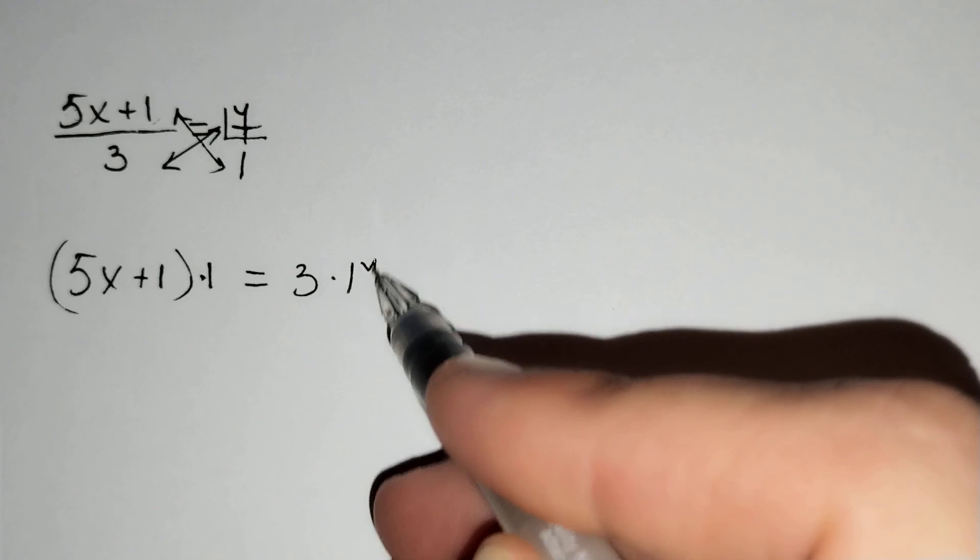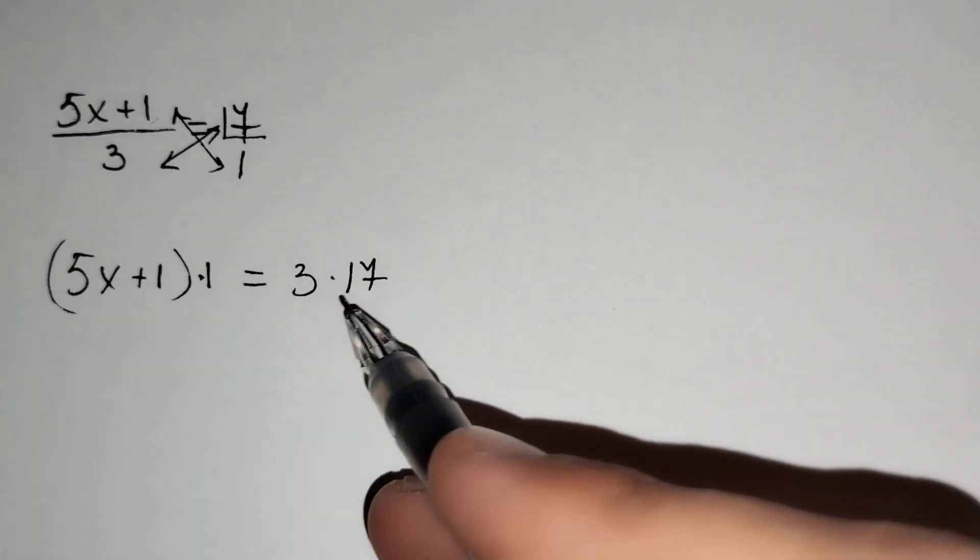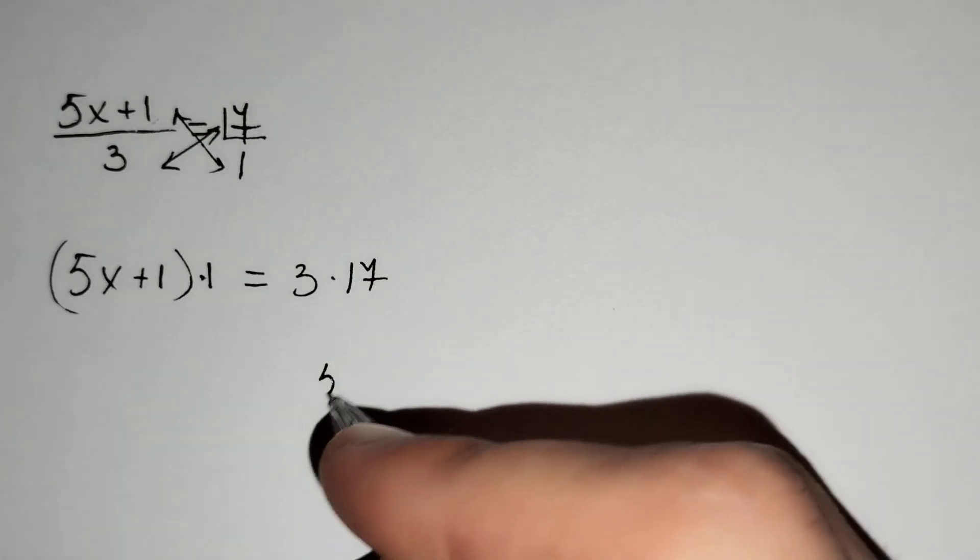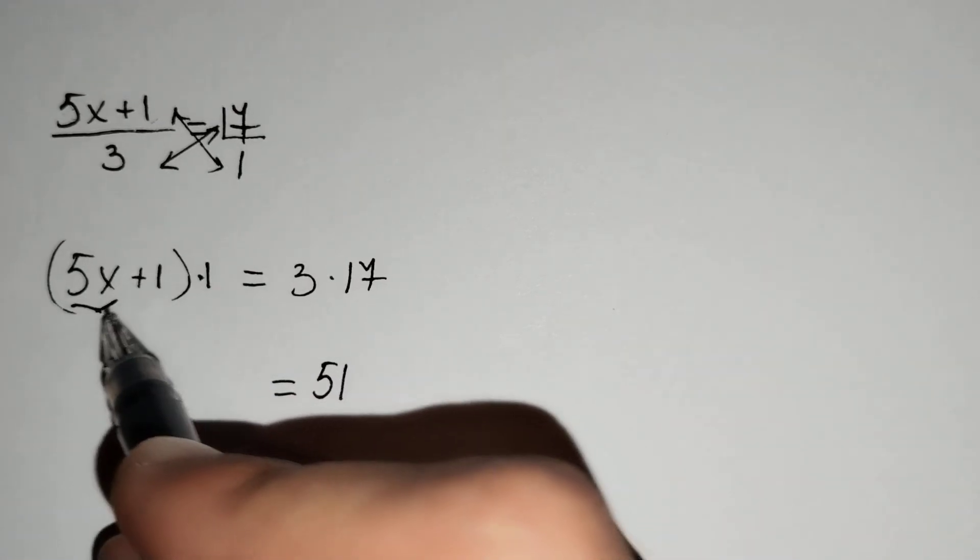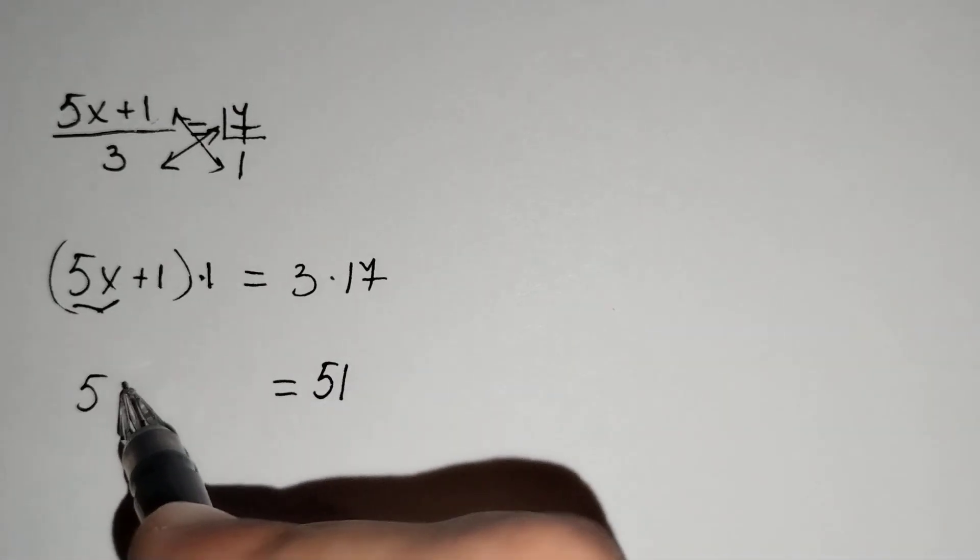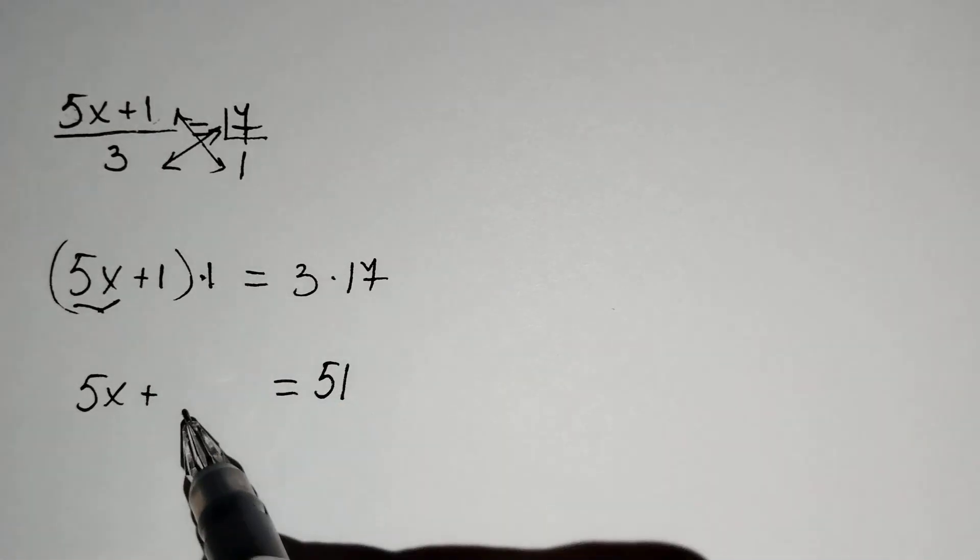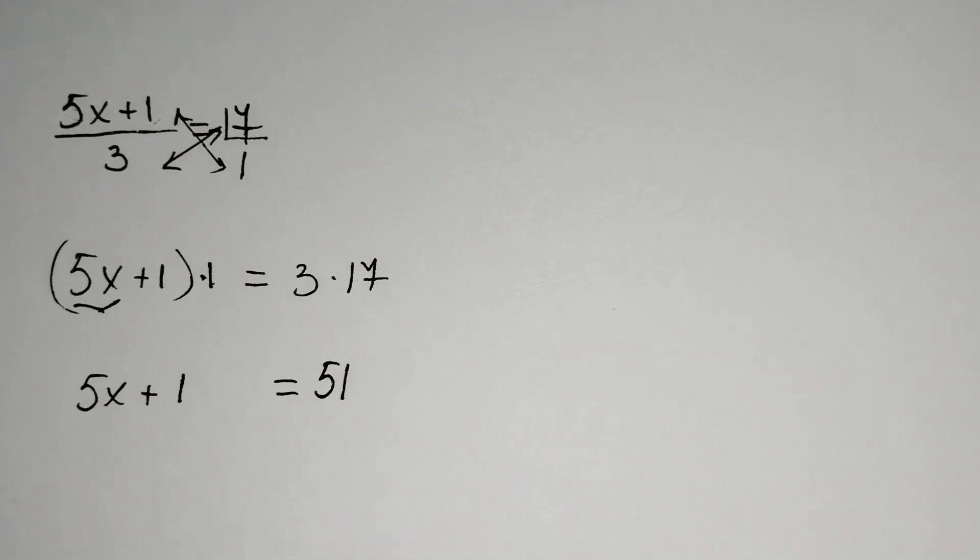You know that 3 × 17 equals 51. So 5x + 1 = 51. Let's move 1 to the other side of our equation: 5x = 51 - 1.